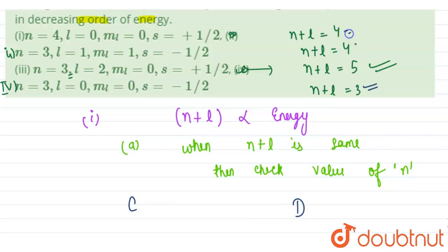Now among first and second, there is a tie because n plus l value is same. So for that we see that the one with the higher n is first. N for first is higher than n for second.